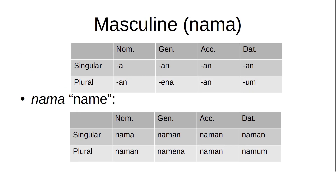Let's look first at the masculine. The singular endings are: nominative -a, genitive -an, accusative -an, dative -an. Plural: nominative -an, genitive -ena, accusative -an, dative -um. Our example noun is Nama, which means 'name.' So: Nama, Naman, Naman, Naman; Naman, Namena, Naman, Namum.